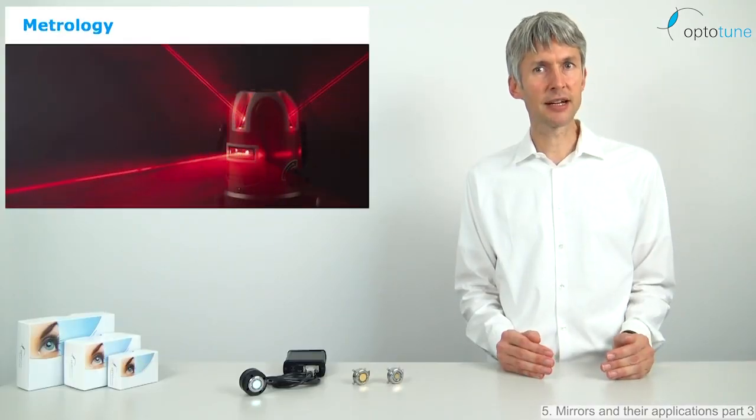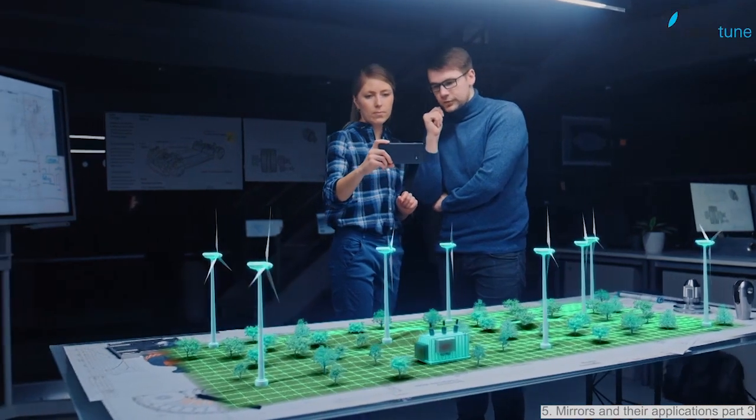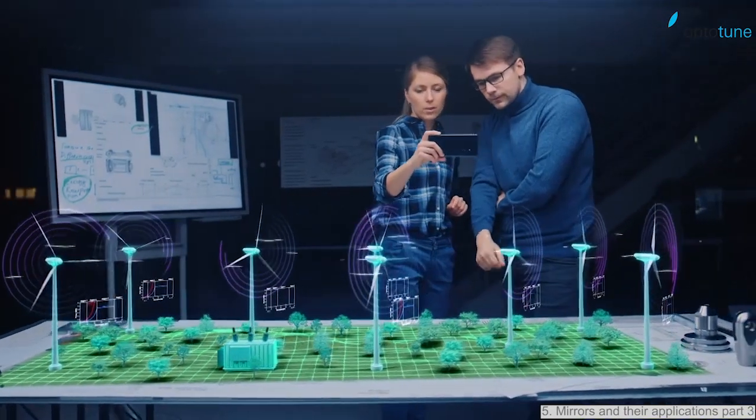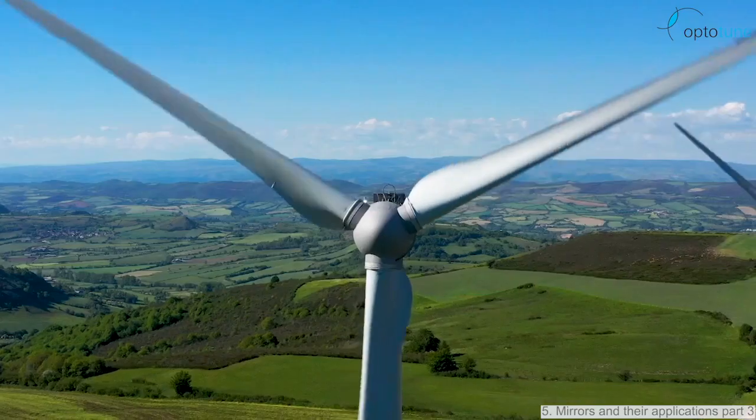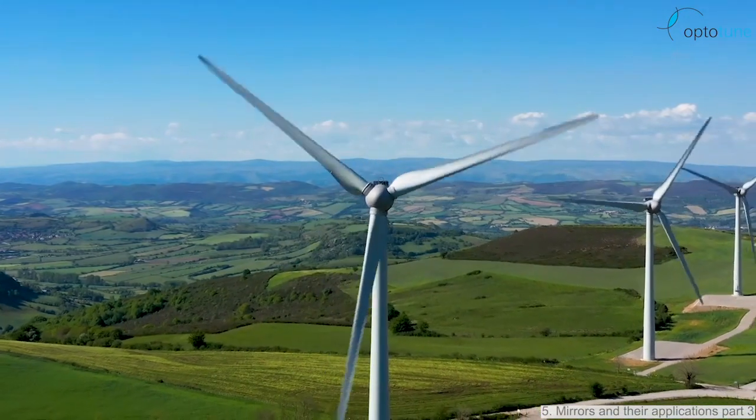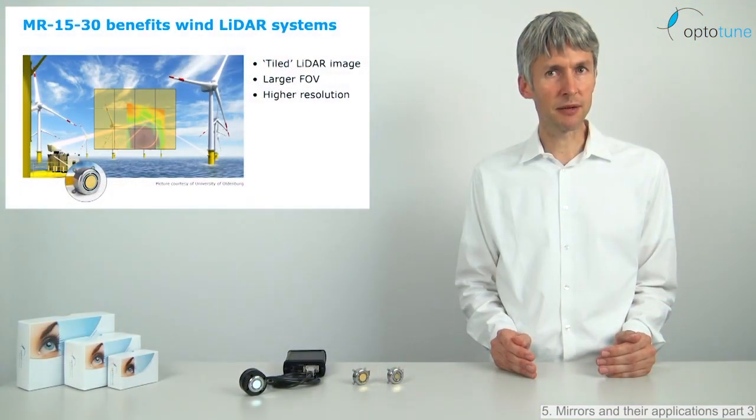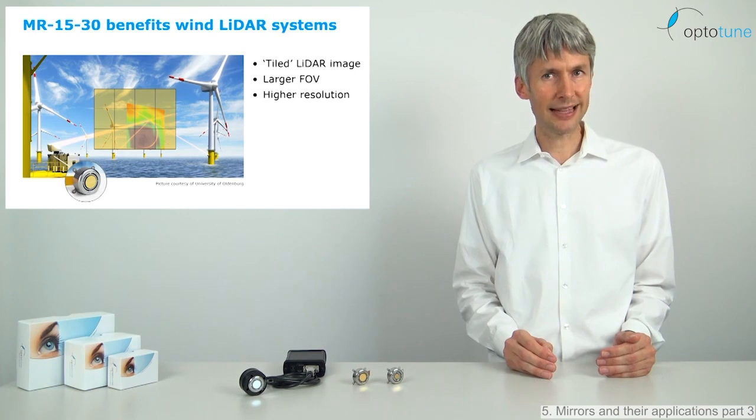The last application area is metrology. Wind LiDAR systems, for example, map the wind speeds at different altitudes by Doppler effect in 3D. Such systems are typically placed on the ground and are used to determine if a certain location will have sufficient wind to establish a profitable wind park. However, it could also be mounted on every wind turbine in order to predict wind gusts and optimize performance and reliability. Our 2D mirror can be used to acquire different LiDAR images and stitch them together. This leads to a larger field of view and higher resolution.